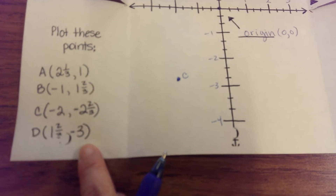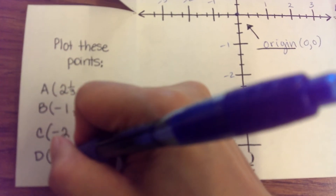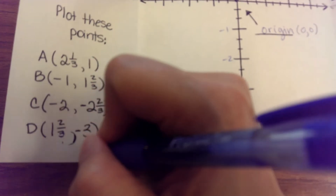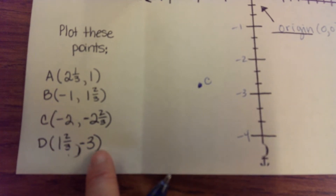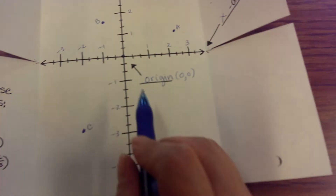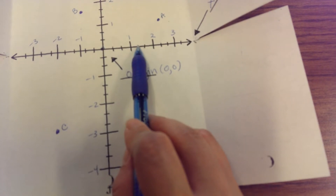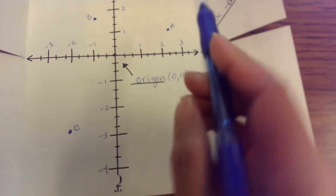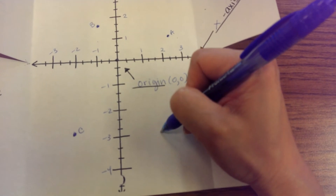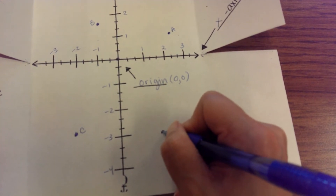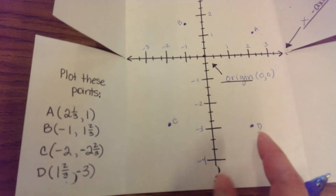Our last point, point D, is (1⅔, -3). We walk one and two-thirds to the right — one whole step, then one-third, two-thirds — and the elevator takes us down three floors: one floor, two floors, three floors. That's where point D is.